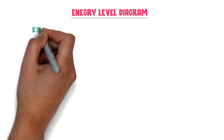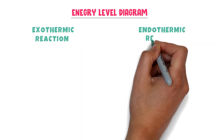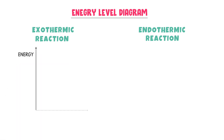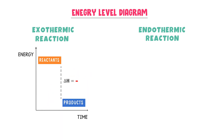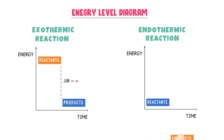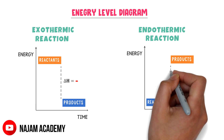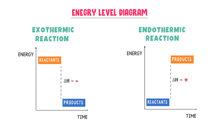You must also learn the energy level diagram of exothermic and endothermic reactions. For an exothermic reaction, plotting energy on the y-axis and time on the x-axis, reactants have high energy while products have lower energy. Remember that the enthalpy change ΔH is always negative for an exothermic reaction. For an endothermic reaction, reactants have lower energy and products have higher energy, and ΔH is always positive.